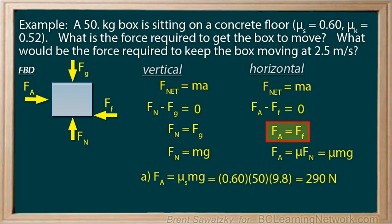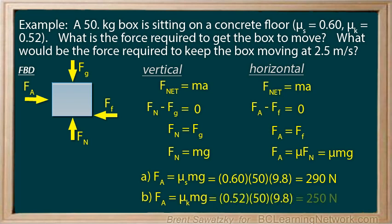Again, Fa equals Ff. But when we're replacing the Ff with our mu Fn, this time we need mu K because the box is moving, 2.5 meters per second, moving along at a constant speed. We're ready to plug in some numbers and solve, and the force to keep the box moving would be 254.8 newtons, or rounded to two sig figs, 250 newtons.